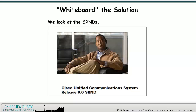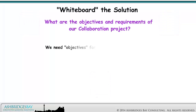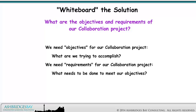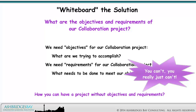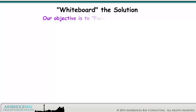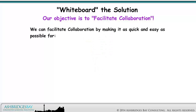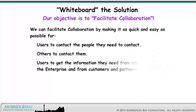We need objectives for our collaboration project — what are we trying to accomplish? We need requirements for our collaboration project — what needs to be done to meet our objectives? How can you have a project without objectives and requirements? Our objective is to facilitate collaboration. We can facilitate collaboration by making it as quick and easy as possible for users to contact the people they need to contact, for others to contact them, and for users to get the information they need from other users in the enterprise and from customers and partners.